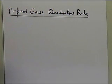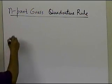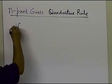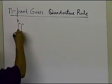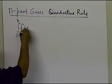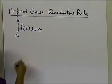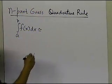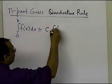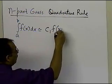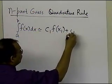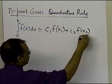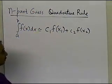What we mean by an n-point Gauss quadrature rule is that rather than two points, we're going to have n points. We already know that if we have an integral going from a to b, f of x dx, and we approximate it by c1 times f of x1, plus c2 times f of x2, that's the two-point Gauss quadrature rule.